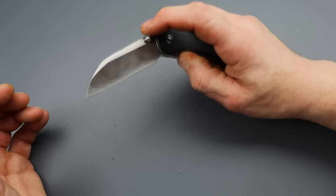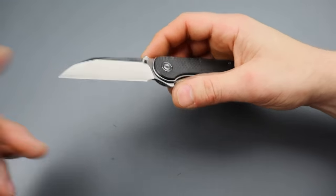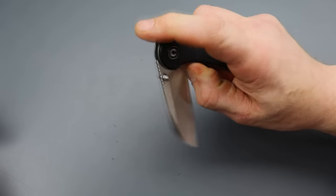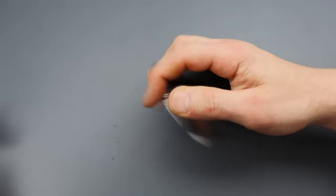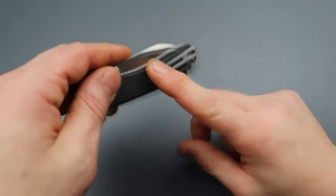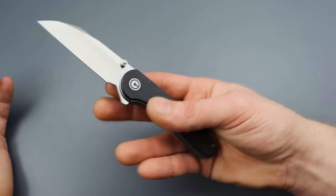And then the Elementum Warncliffe because the Elementum already existed, even though this one added another form of deployment. You have thumb studs and the flipper tab. And I do think that this is the best version of the Elementum, but, you know, it already existed. But these knives would absolutely be on the list otherwise.